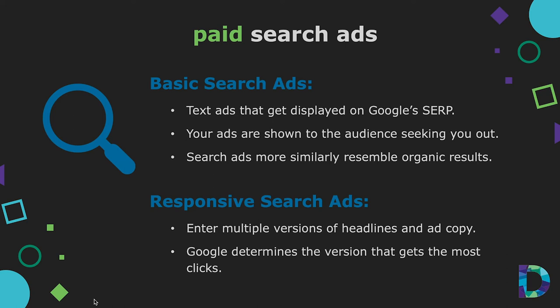Google's basic search ads are text ads displayed on Google's SERPs. The benefit is that you're showing your ad to people actively searching for your product or service. Google now shows ads in the same format as organic results, with only the discrete word 'ad' as the difference — so users are more likely to click. Google's responsive search ads allow you to enter multiple headlines and ad copy versions, which are tested until Google determines which version gets the most clicks and best suits your target audience.